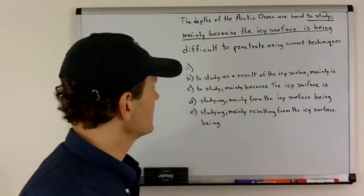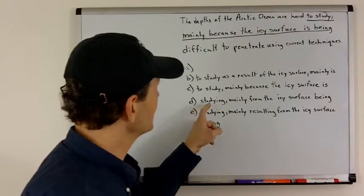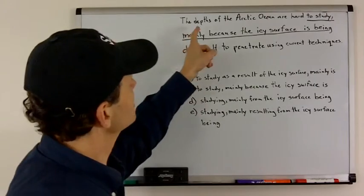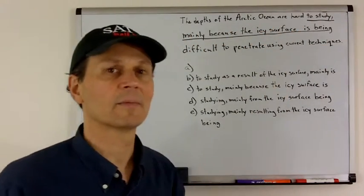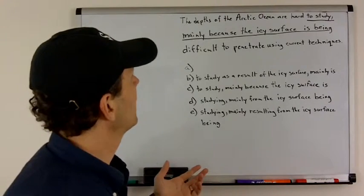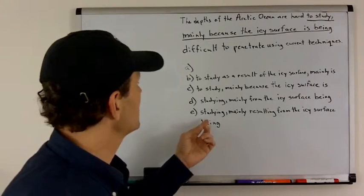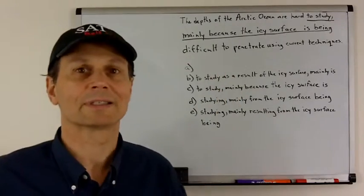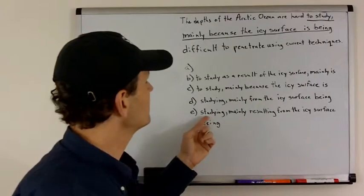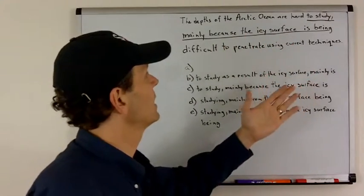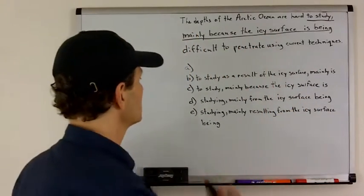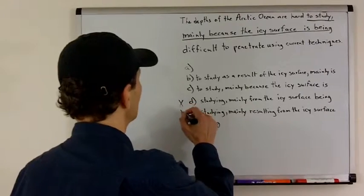Now, we have D and E. And, we can eliminate D and E with this studying because the depths of the Arctic Ocean are hard studying. That doesn't really make any sense. Does that mean that the Arctic Ocean is studying? Or, like it's a student or something? It doesn't convey the information that we're trying to convey. That the ocean is something that is hard to study. So, D and E are not possibilities.